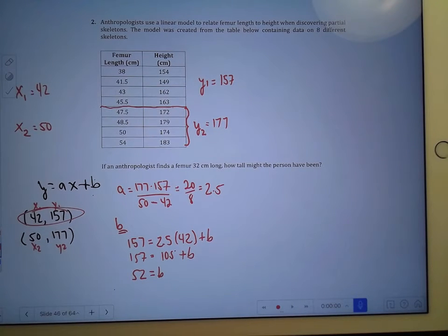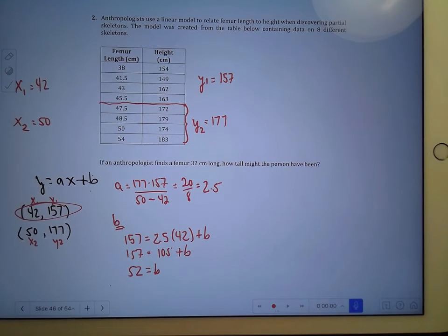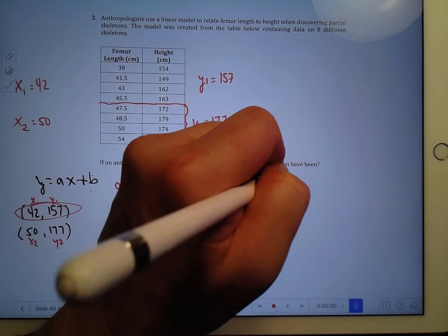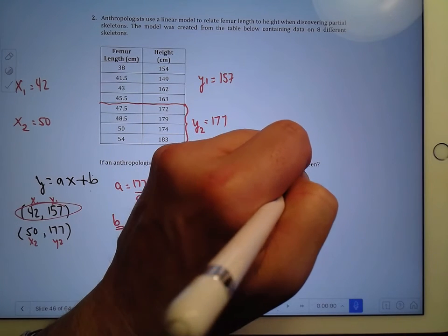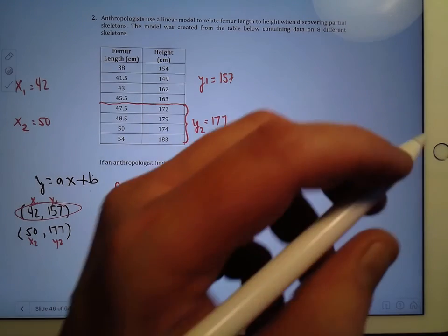So the equation of this line now that's going to allow me to make my prediction is y equals 2.5x—that was the rate of change that I calculated—plus a b of 52.